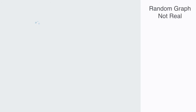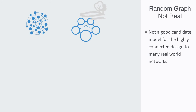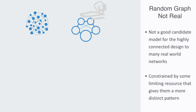Unlike real world networks, there is low clustering in random networks. Therefore, the resulting network very rarely contains highly connected nodes. Consequently, the random network is not a good candidate model for the highly connected architecture that characterizes the many networks we see around us. Although a useful theoretical exercise, random networks in general do not represent networks in the real world. They are considered far more random, because real world networks are typically created to serve some function and are constrained by some limiting resource that gives them a more distinct pattern.